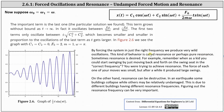Sometimes resonance is desired. For example, remember when as a kid you could start swinging by just moving back and forth on the swing set at the correct frequency? You were trying to achieve resonance. The force of each move was small, but after a while it produced large swings. On the other hand, resonance can be destructive. In an earthquake, some buildings collapse while others are relatively undamaged, due to different buildings having different resonance frequencies. Figuring out resonance frequency can be very important. I hope you found this helpful.